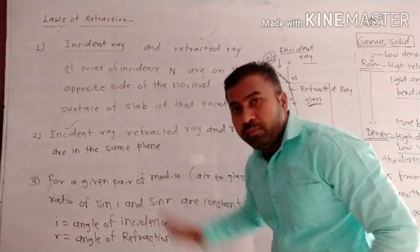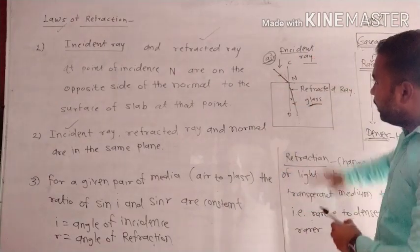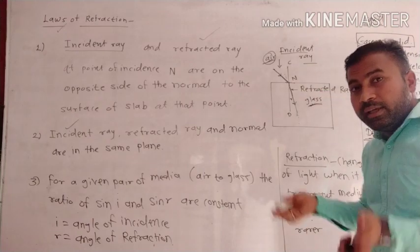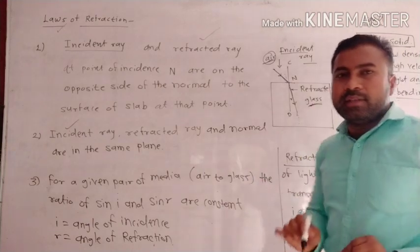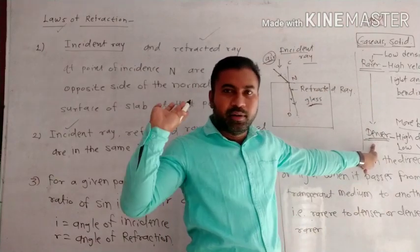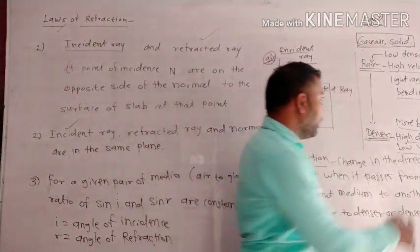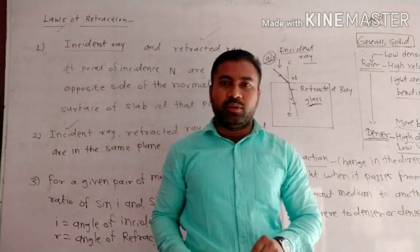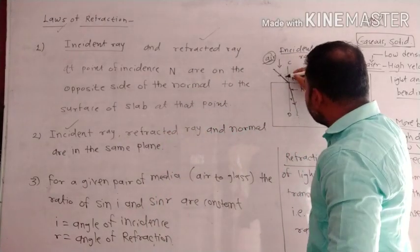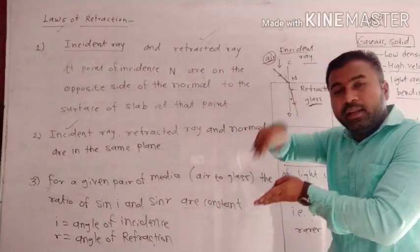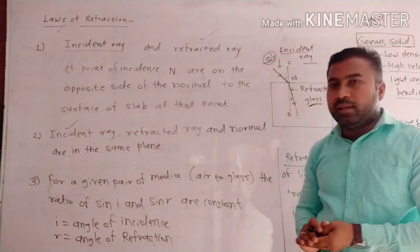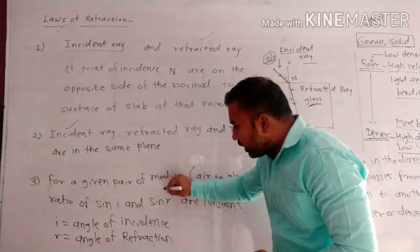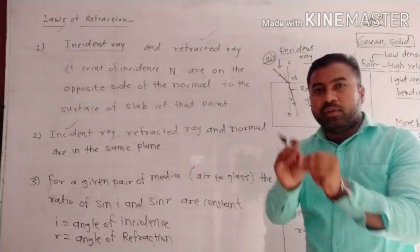For a given pair of media, you can change the pair — for example, air to diamond. The bending of light depends on the density of that particular medium. The density of diamond is high, so there is more bending. More bending corresponds to low velocity. The ratio of sine i upon sine r is the basis of the third law of refraction.